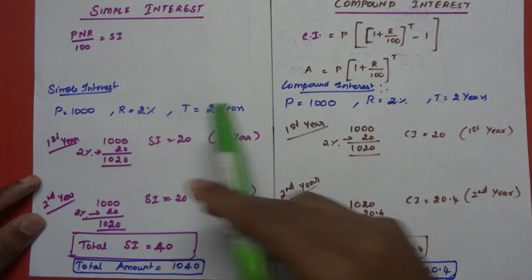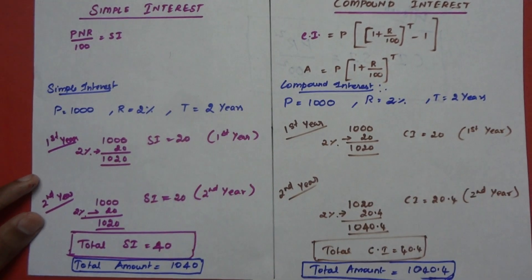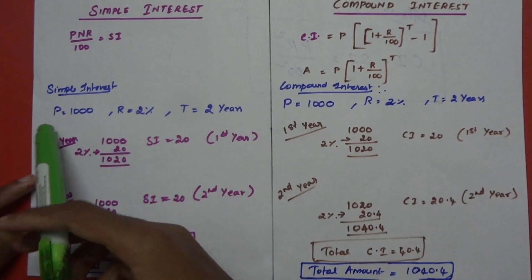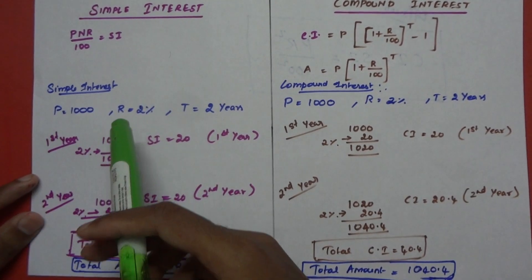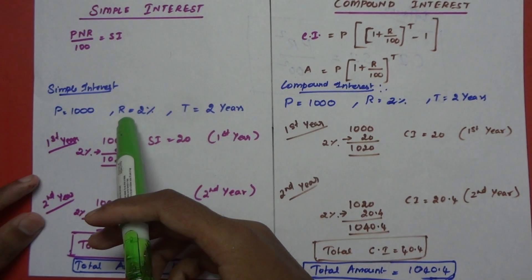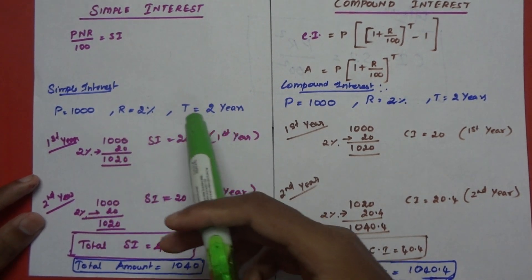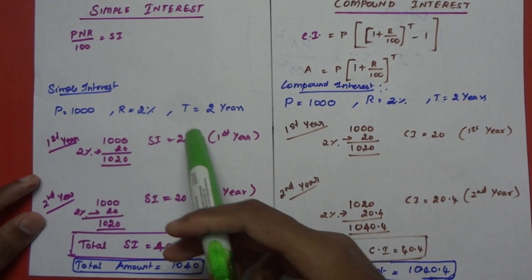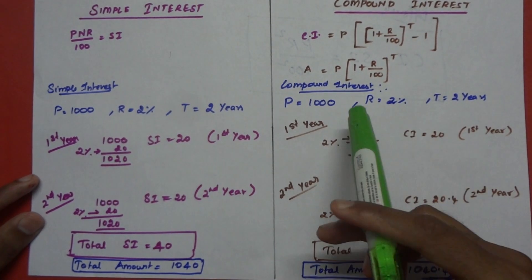Now, if you look at the two problems: the principal is 1,000, the rate of interest is 2 percent, and the time is 2 years.